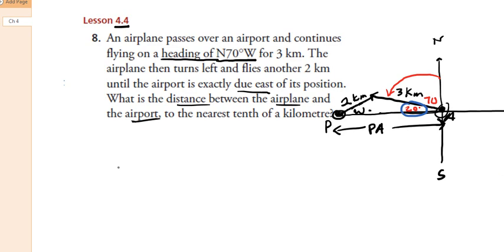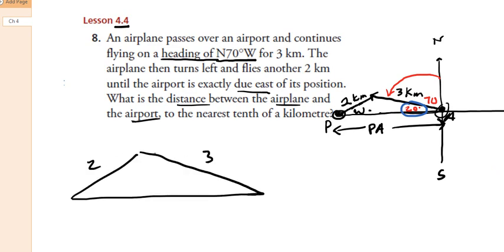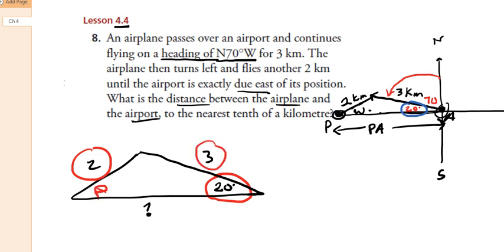I'm going to redraw this triangle on a larger scale. That side is two, and that side is three. We know what this angle is — 20 degrees — and we're trying to find the distance on the far side. Any guesses on what law to use? Sine law — we've got an angle and its opposite side length, so we can find angle P using the sine law.